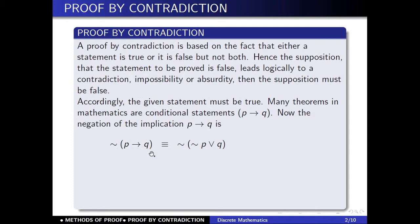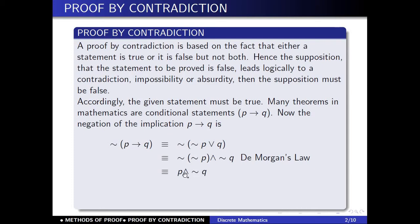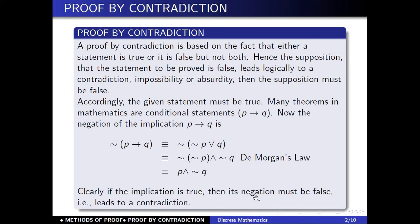To summarize: P implies Q, and its negation. The negation of P implies Q is a conjunction, giving us P and negation Q. So the negation of P implies Q equals P and negation Q.